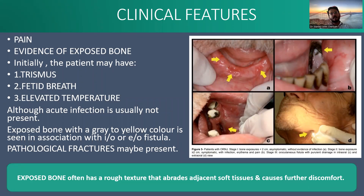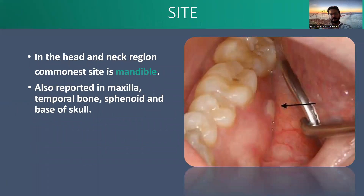Clinical features mainly include pain and evidence of exposed bone. The patient may have pain with bony necrosis and elevated temperature. Although acute infection is usually not present, exposed bone with a gray or yellow color is seen, with possible pathological fractures. The most commonly affected site is the mandible because of more cortical bone and less vascularity. It is also reported in the maxilla, temporal bone, and base of skull.